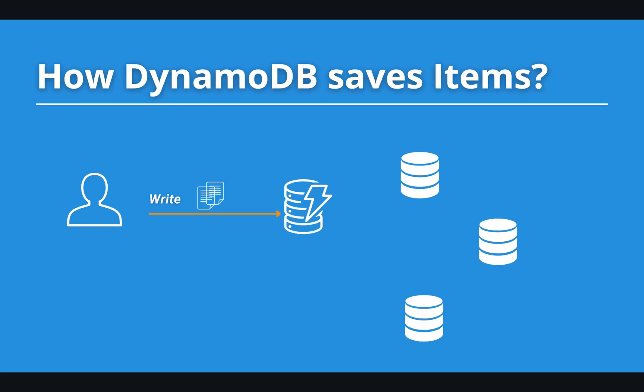To understand how DynamoDB saves items, let's imagine our user Paul wants to save some data. He sends a request to the database server. DynamoDB will save that piece of information to three geographically distinct data centers, which secures our data and provides high availability. If one of the data centers goes down, there are still two up and running.